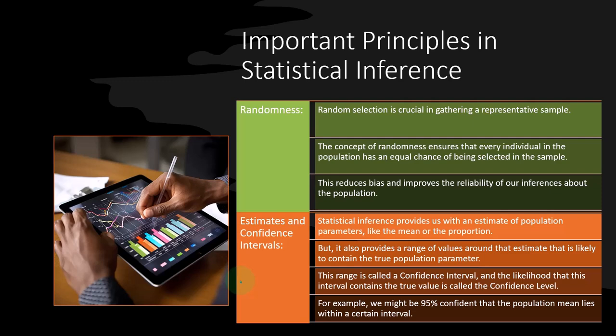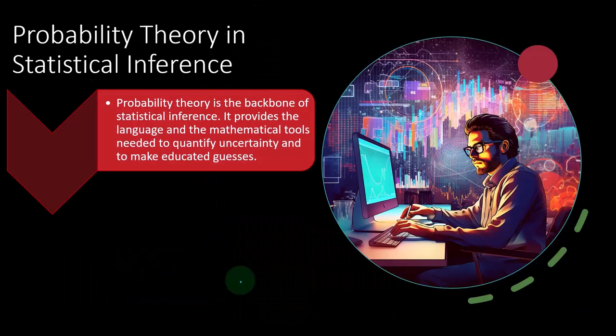If we can use statistical equations, then we usually have more predictive power and confidence going into the future. So probability theory is the backbone of statistical inference. It provides the language and the mathematic tools needed to quantify uncertainty and to make educated guesses.